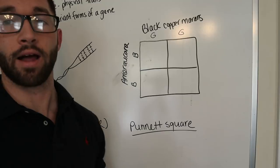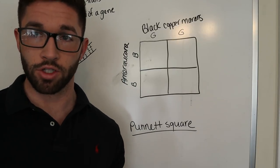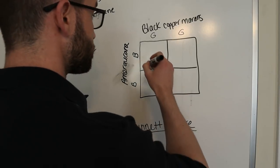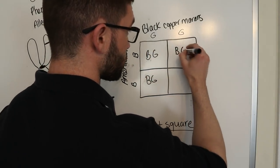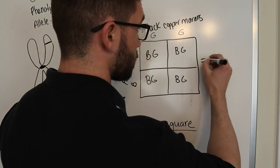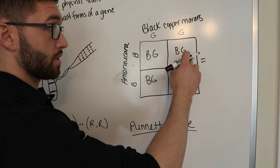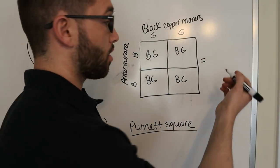And so, when you cross, in order for it to be an olive egger, it has to inherit one brown egg gene and one blue egg gene. And in this case, from the first-generation cross, all 100% of the offspring will inherit one of each gene, which makes them olive eggers.